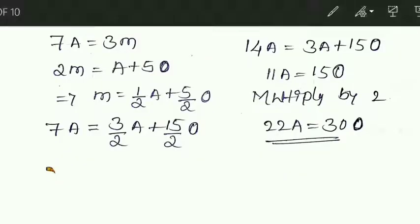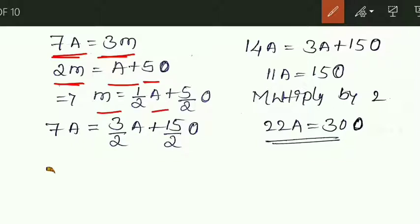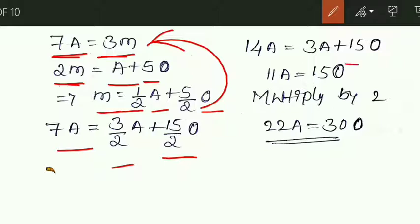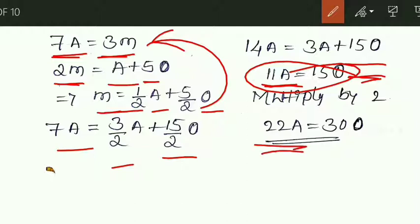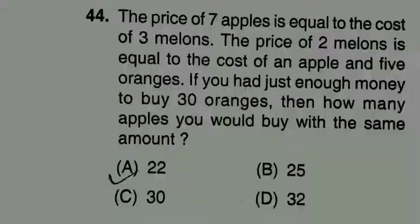We will form equations and find the answer easily. 7 apples = 3 melons, and 2 melons = 1 apple + 5 oranges. From the second equation, M = (1/2)A + (5/2)O. Substituting into the first equation: 7A = 3M gives 7A = (3/2)A + (15/2)O. Simplifying, and since we have money for 30 oranges, multiplying by 2, we get 22 apples. So 30 oranges is equal to 22 apples; we can purchase 22 apples.